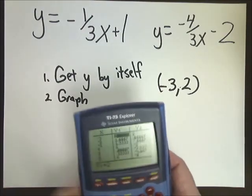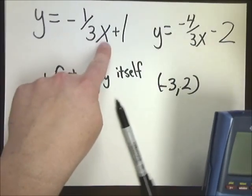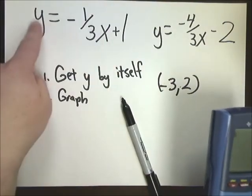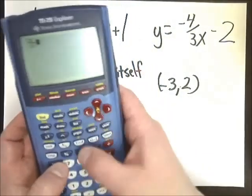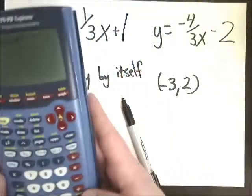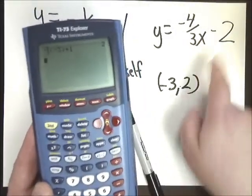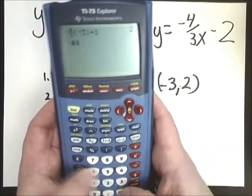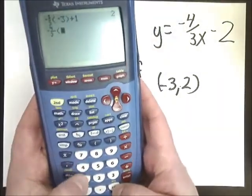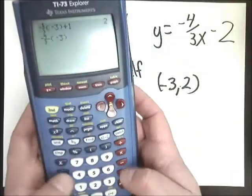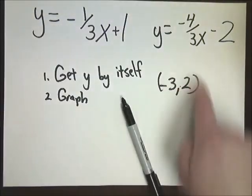You can actually test it, by the way. If I went back in and typed in negative 3 for X into all this, I should get a Y of 2. So let's test it out real fast. Parentheses, negative 3, plus 1. And I get 2 like I'm supposed to. Let's try the other one. Negative 4 thirds. And then where the X is, I'm going to put parentheses and put negative 3. Minus 2. Hit enter. And see, they're both 2 just like they're supposed to. So this is my solution.